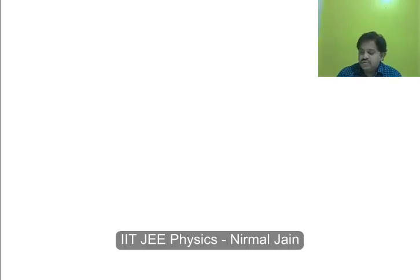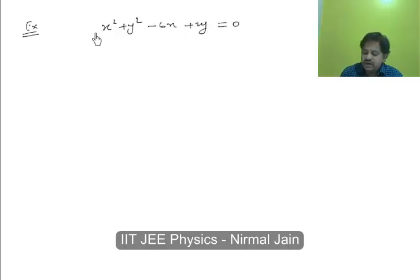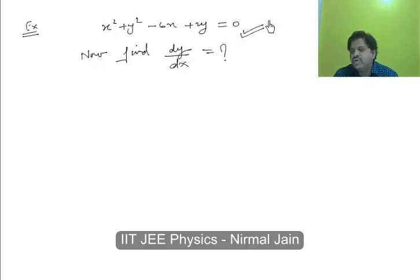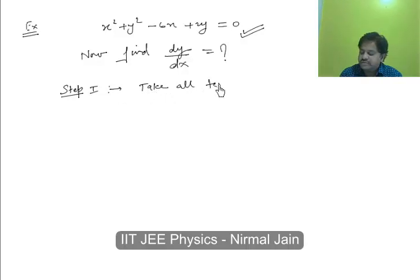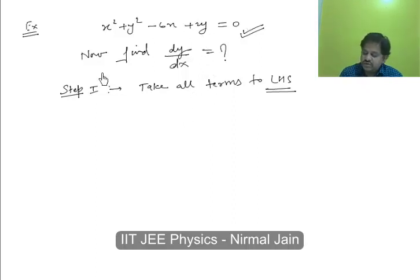So how will we differentiate these implicit functions — that is all we have to see in this video lecture. Let's take an example: x squared plus y squared minus 6x plus 2y equals 0, and we are asked to find dy/dx. At first we have to understand whether this is an implicit function or not. So in step 1, we take all terms to the LHS, which is already done in this problem.